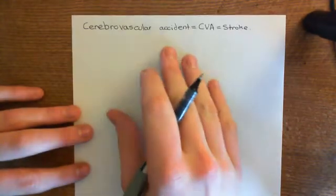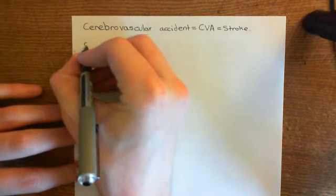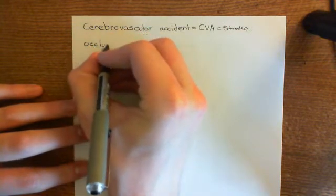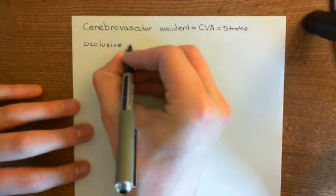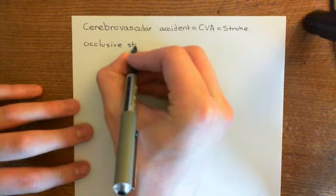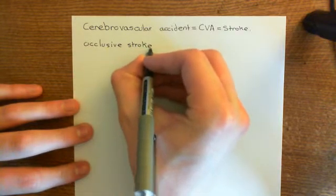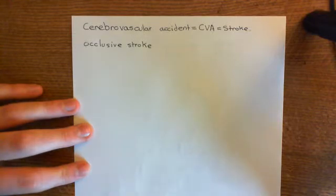If we've got someone suffering from an occlusive stroke, there are two major types of stroke. The sort I have described is what's known as an occlusive stroke, where you have a thrombus, or potentially a thromboembolus, blocking a blood vessel that supplies a portion of the brain, leading to ischemia and potentially the death of that portion of the brain.